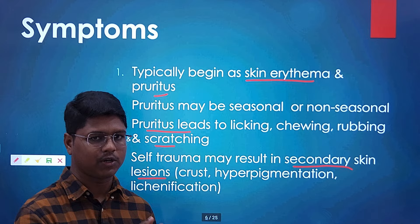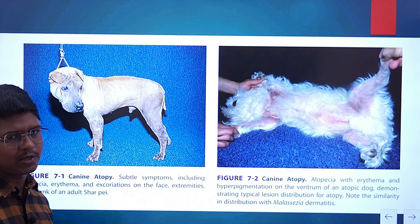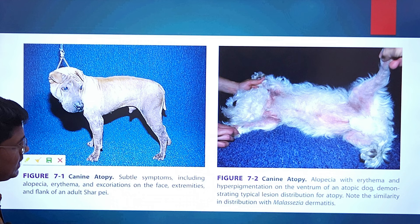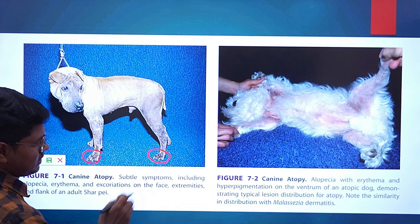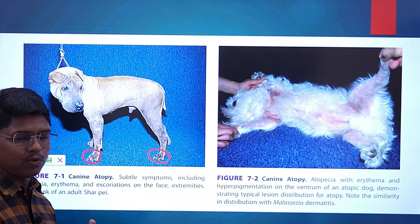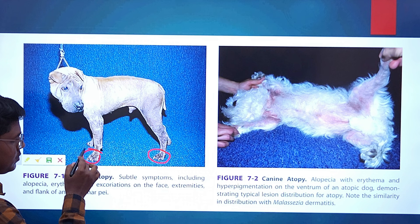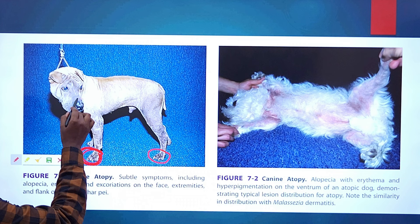Now we will look at some images. Atopic dermatitis is usually diagnosed last, as we will see. In this case of atopic dermatitis, you will find excoriation especially on the paws — very typical to atopic dermatitis. There will be pododermatitis with only erythema; you may not find any secretion unless secondary bacterial or fungal infection is present. On the nose there are also excoriations. The excoriation means wearing of the skin.